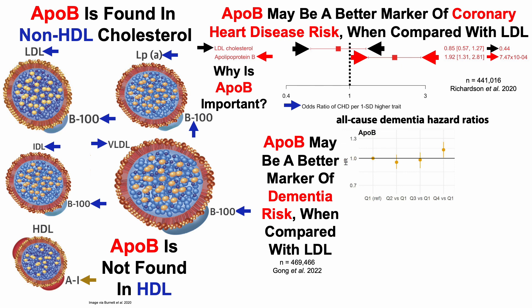In this study, they looked at all-cause dementia risk in association with APO-B and LDL. On the left, we've got relatively low levels of APO-B and LDL, and on the right, relatively higher levels. For APO-B, we can see that its confidence interval is completely above that hazard ratio of 1.